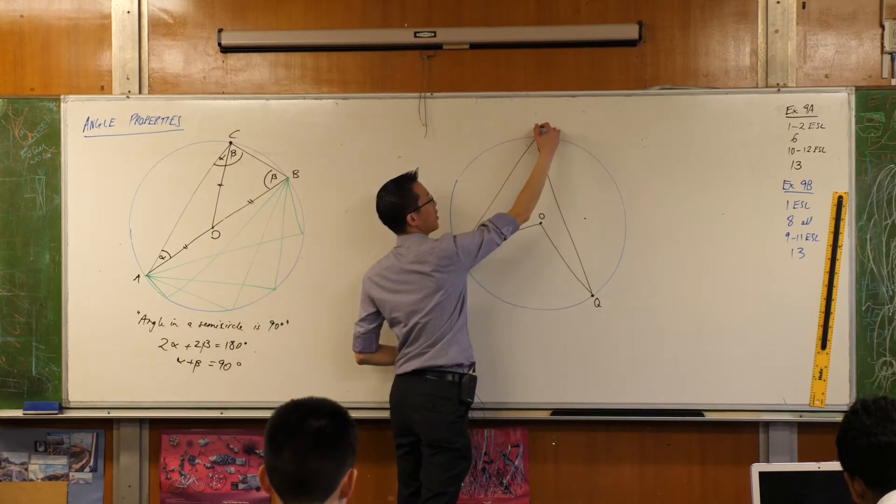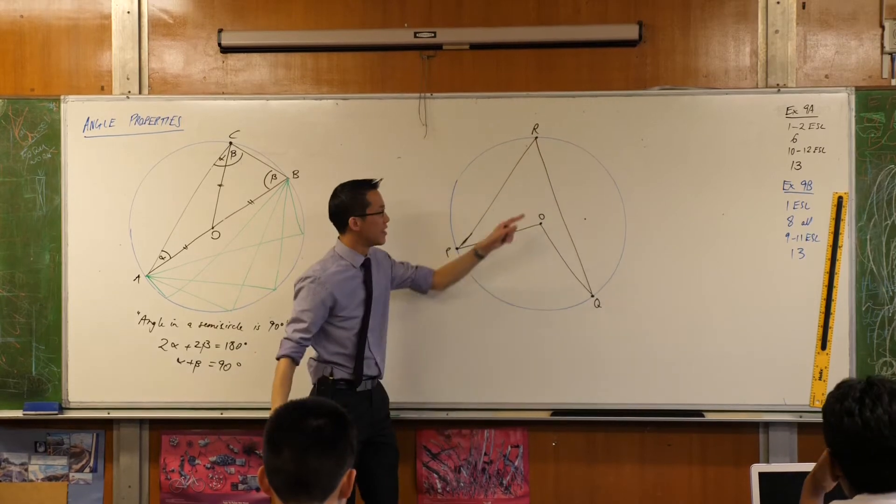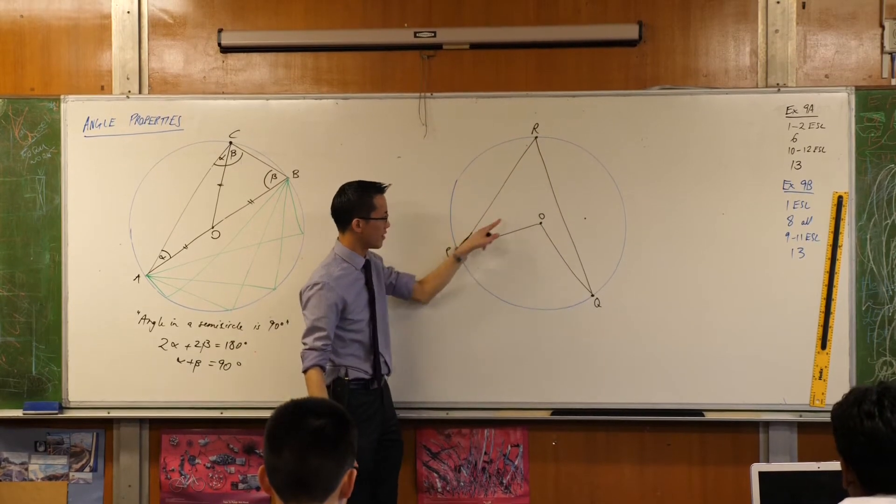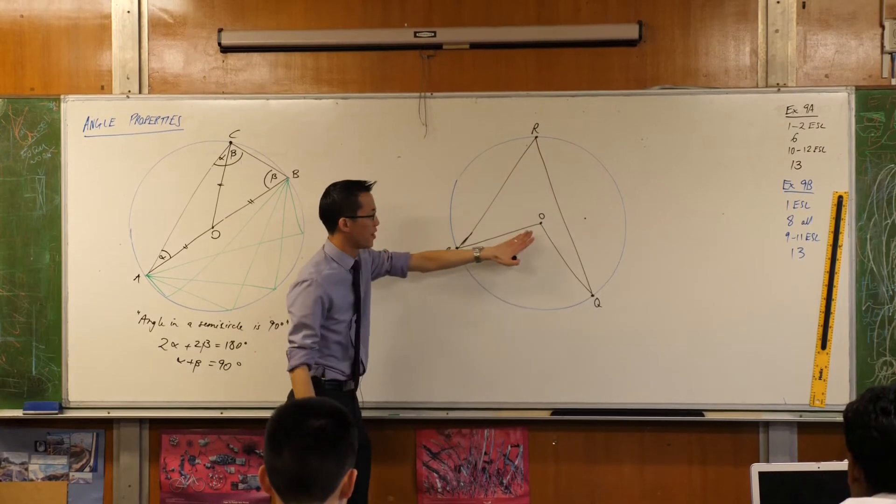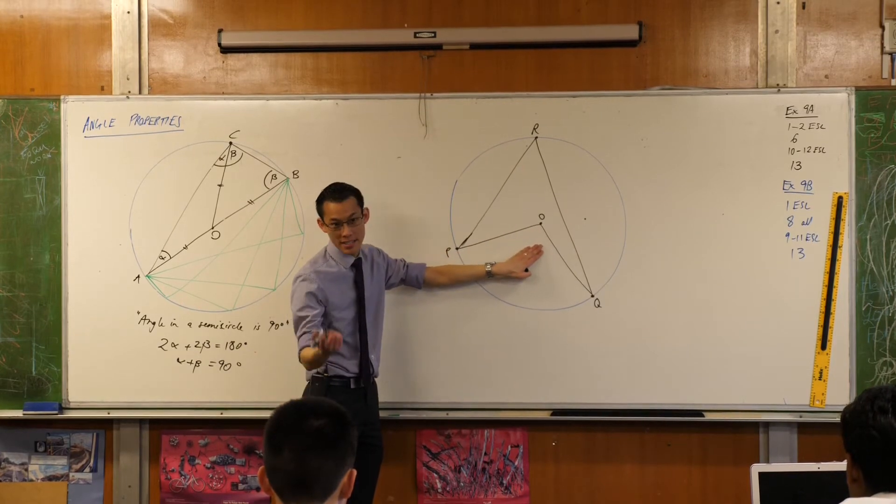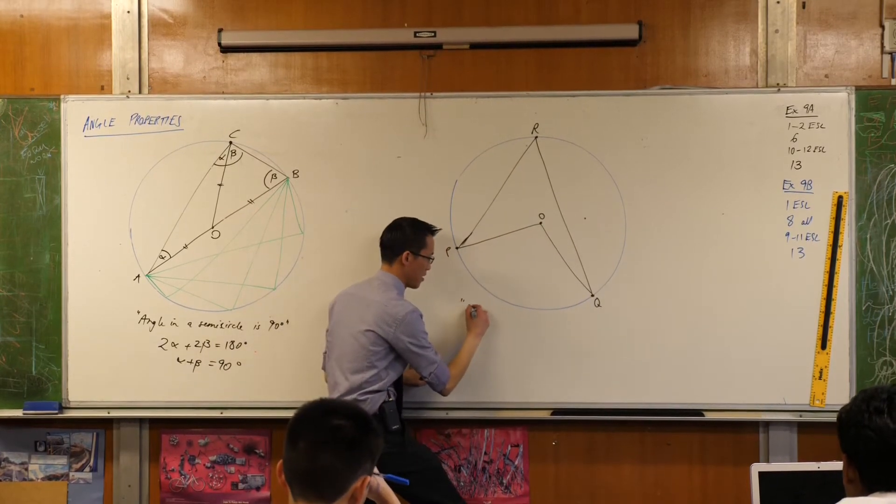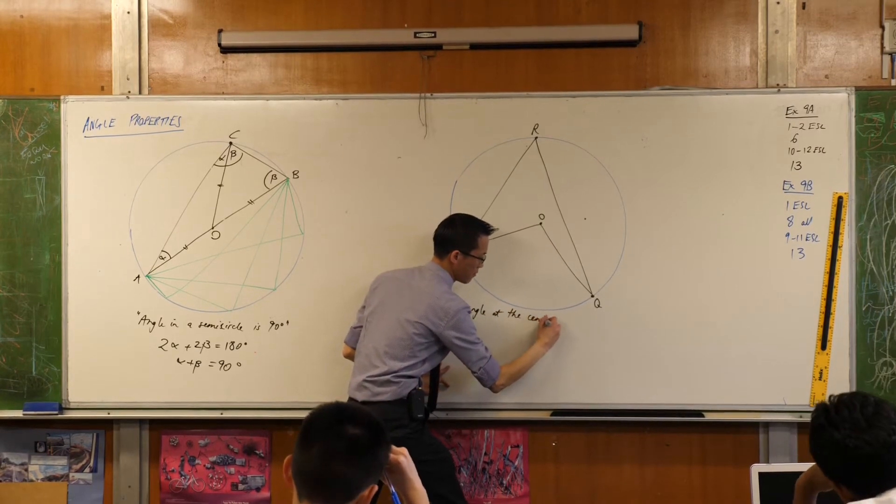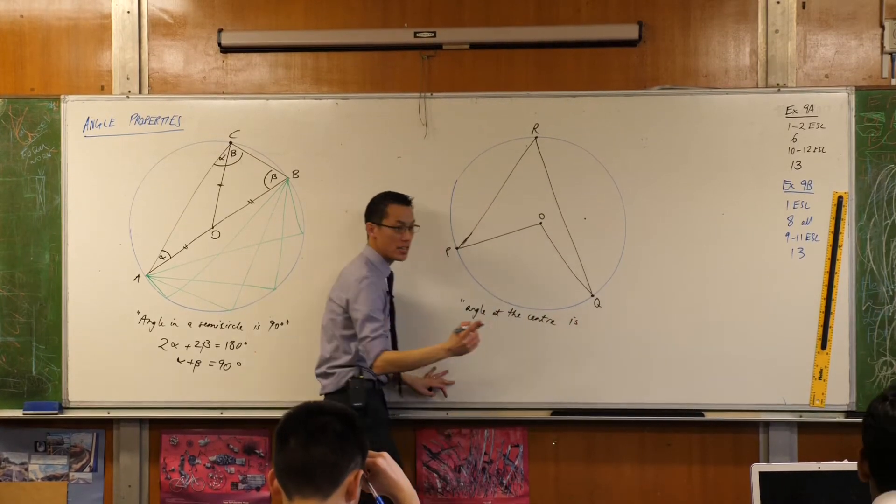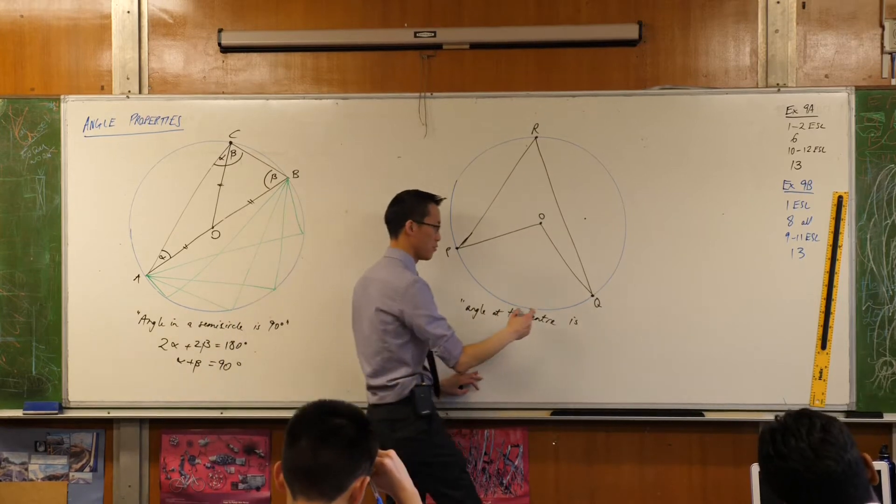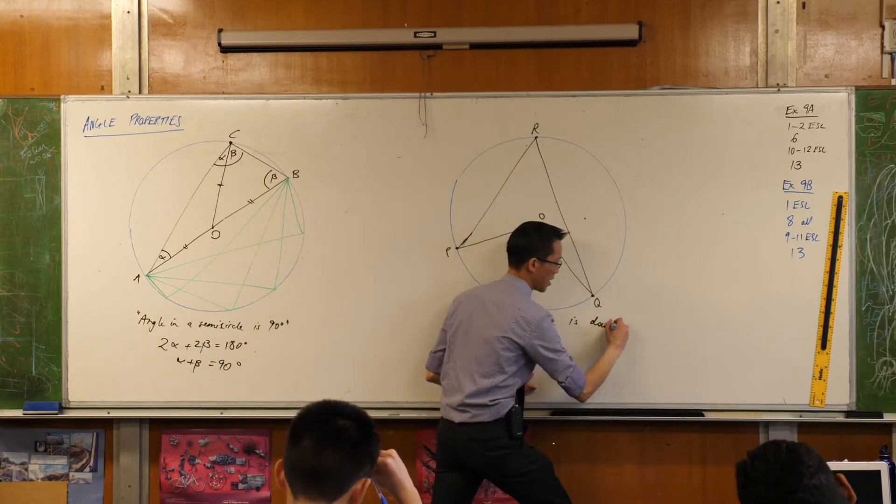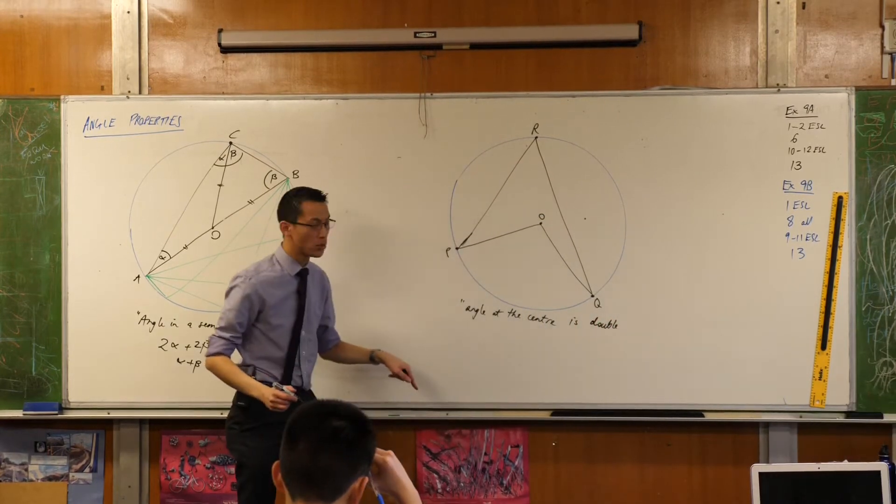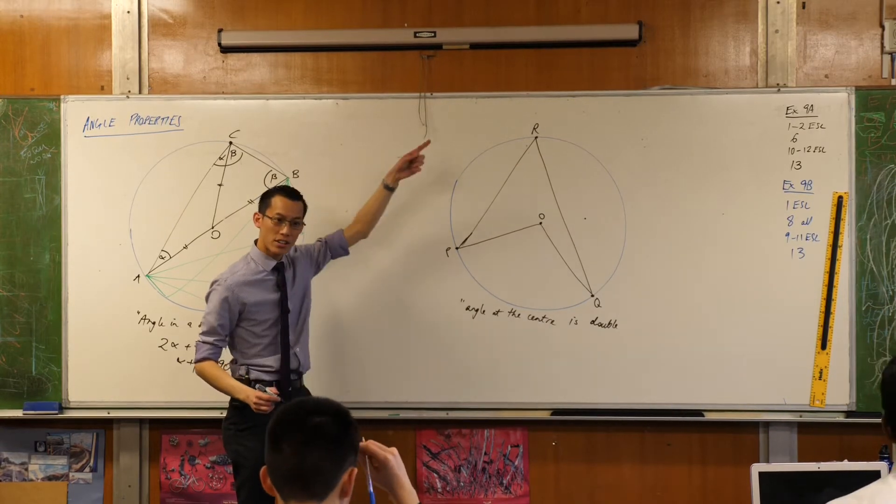So let's call this one R. So POQ double PRT. Okay. So the angle at the center, and this is in fact the way that we will state it. The angle at the center is, Nadee, you said double, right? Double? You could say twice, but double is fine as well. Is double the angle at the circumference.